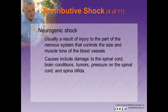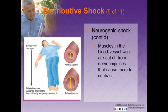Neurogenic shock is usually a result of injury to the part of the nervous system that controls the size and muscle tone of the blood vessels. Causes include damage to the spinal cord from trauma, brain conditions, tumors, pressure on the spinal cord, and spina bifida. In neurogenic shock, muscles in the walls of the blood vessels are cut off from the sympathetic nervous system, causing all vessels below the level of spinal injury to dilate widely, increasing the capacity of the vascular system and causing blood pooling. Even though no blood or fluid has actually been lost, perfusion of organs and tissues becomes inadequate and shock occurs.